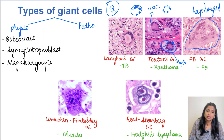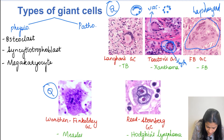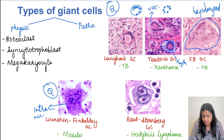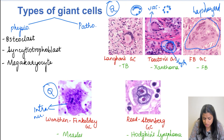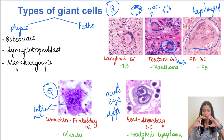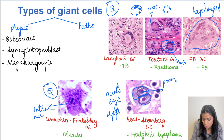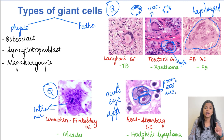Warthin-Finkeldey giant cell is seen in measles and shows intranuclear inclusions — dark pinkish material visible inside the nucleus. Reed-Sternberg giant cell is seen in Hodgkin's lymphoma and has a classical owl's eye appearance due to binucleated mirror-image nuclei with prominent eosinophilic nucleoli.